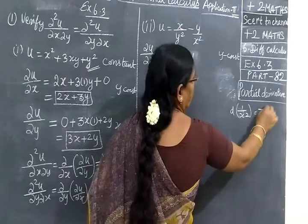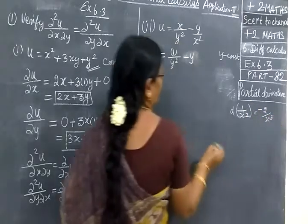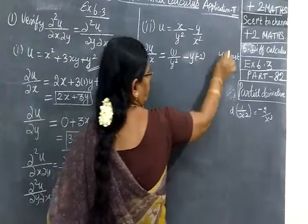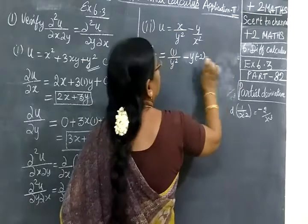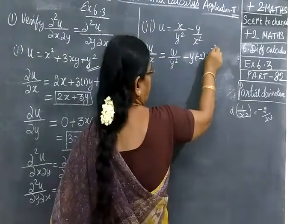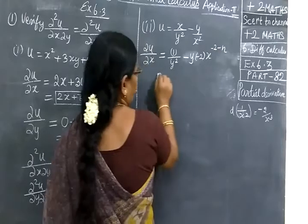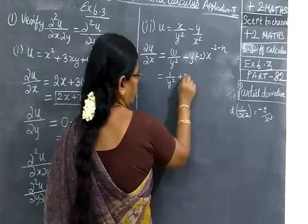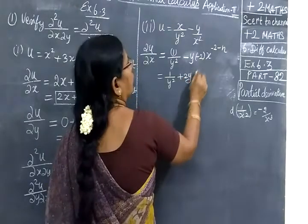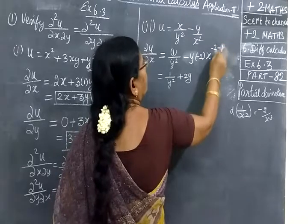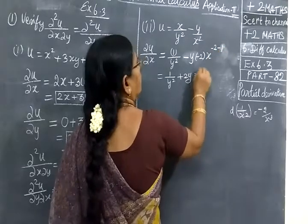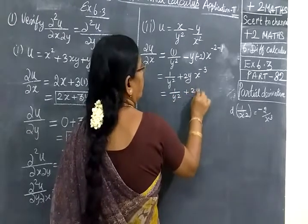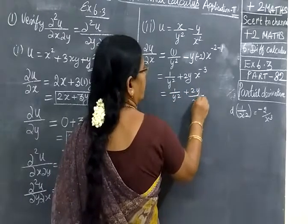Differentiation gives minus 2 by x². Then applying the power rule with n minus 1: result is 1 by y square, giving minus 2 by y square, plus 2y. So we get minus 1, s to the power minus 3, giving 1 by y square, plus 2y by x².